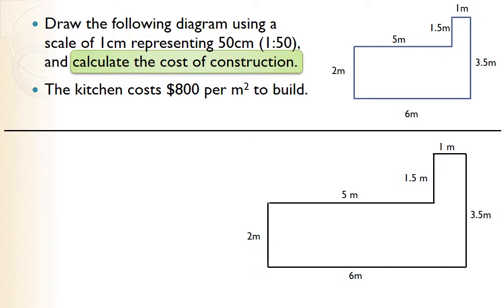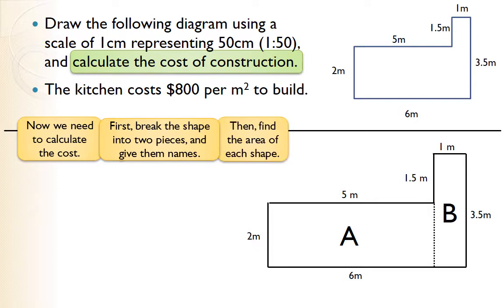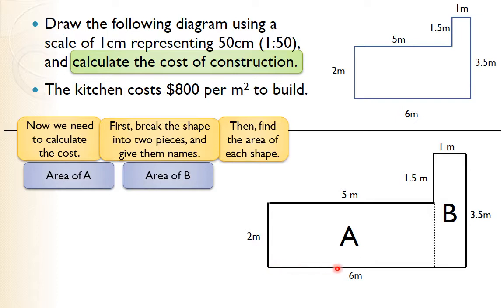There's one remaining part of the question: we have to calculate how much construction will cost. We're told it costs $800 per square meter, so we need to find the area first. This shape is not a simple rectangle — it's like two rectangles tacked together, a compound shape. We'll break it into two pieces, calling them Part A and Part B, then find the area of each and add them together.